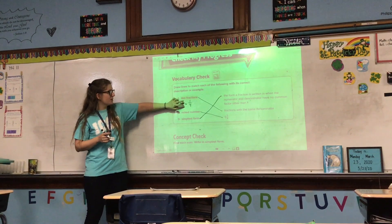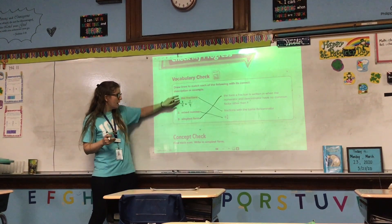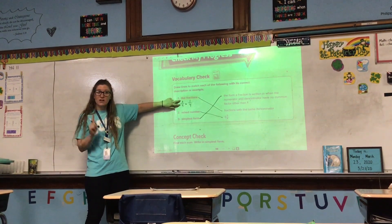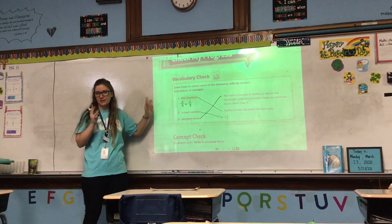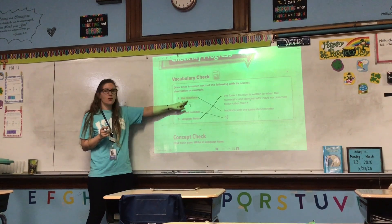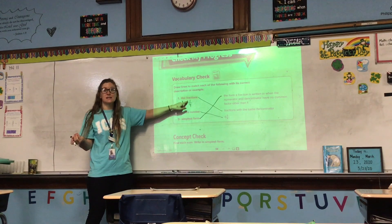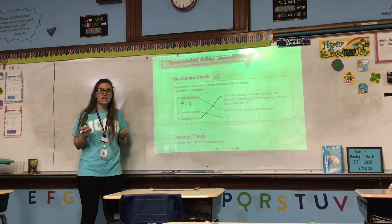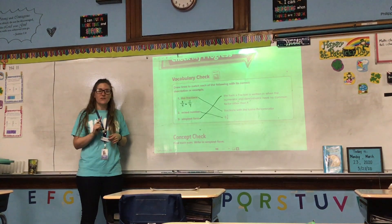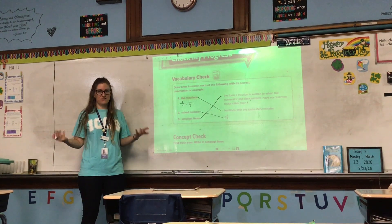We can look at 3 fourths and 1 fourth and tell right away that they are both in simplest form because 3 and 4 are one digit away. We also know if we have a unit fraction, which means our numerator is 1, that it is in simplest form. Remember those other tricks — if you can't use a trick, what should you do? List the factors.